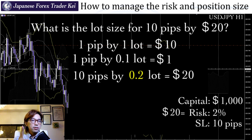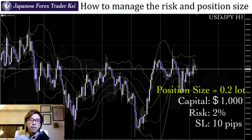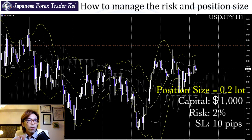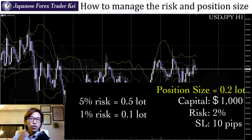If you are positive based on your knowledge and decide to take 5% risk on a trade, that means you take a risk of $50, and the correct lot sizing would be 0.5 lot. Or if you want to take only 1% risk, it's going to be 0.1 lot. Depending on the circumstance, your lot sizing should change, and this is exactly how I manage my positions on each trade.